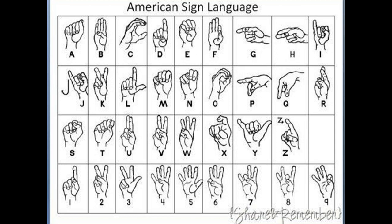By learning this alphabet, you can spell words. You don't have to learn all the words in American Sign Language — you can simply spell them out. For instance, names: there's no American Sign Language sign for names, so you have to spell your name out. I would print up a copy of the reference guide — you can do a Google image search and a billion of these will show up. Print one out and keep it around so when you're practicing, you have something to refer to.